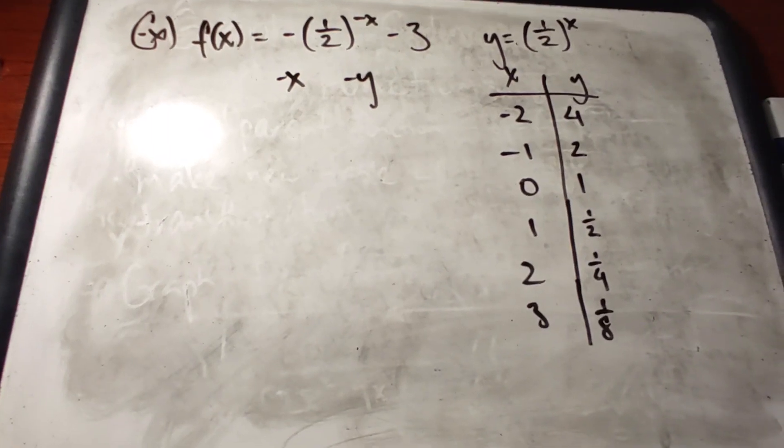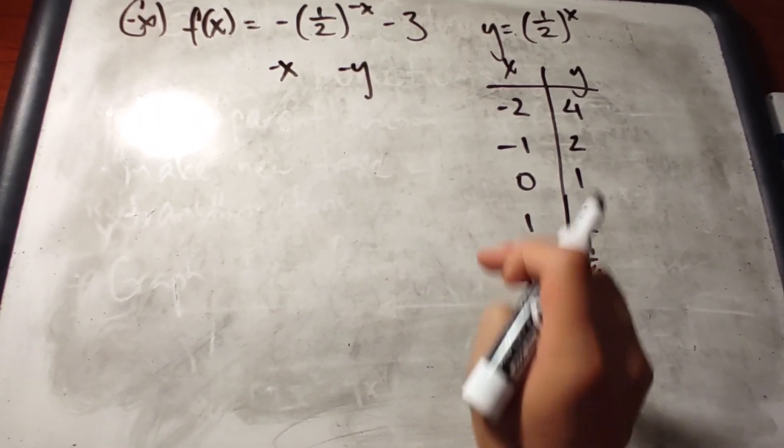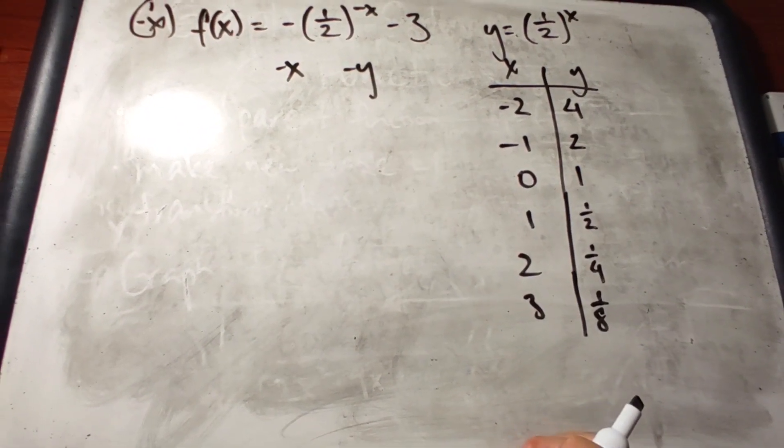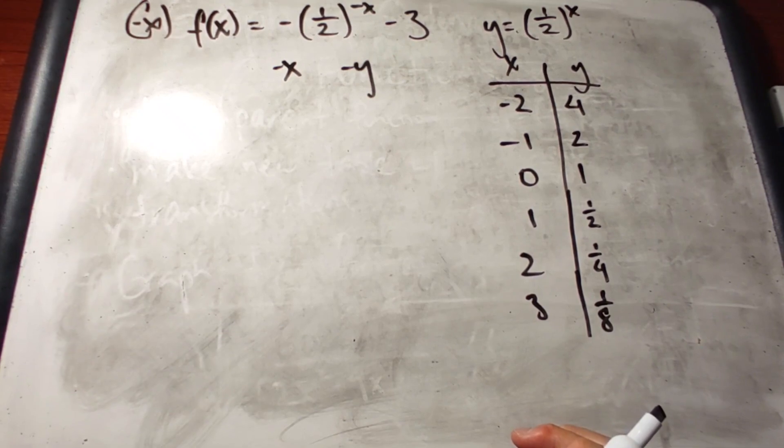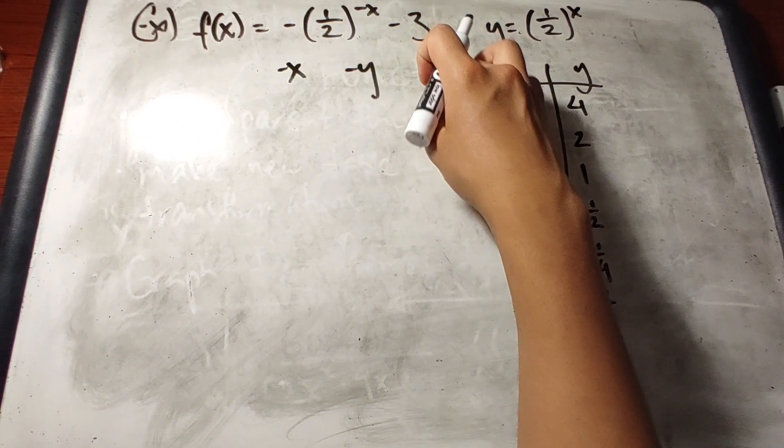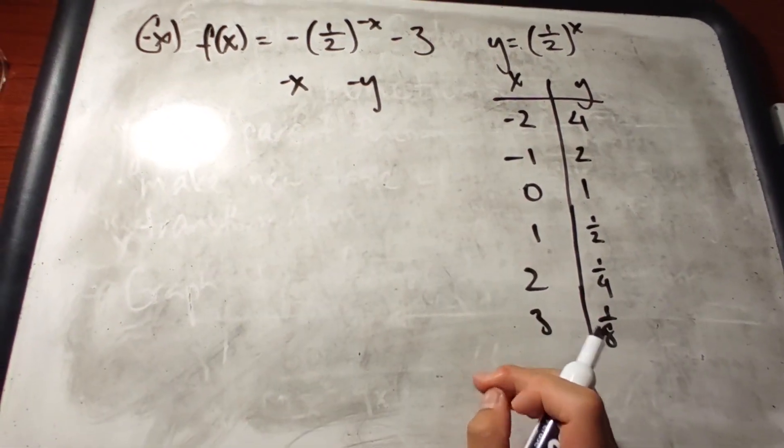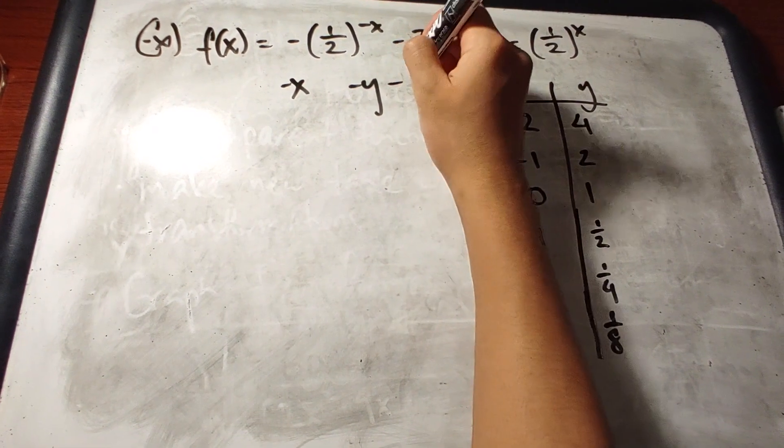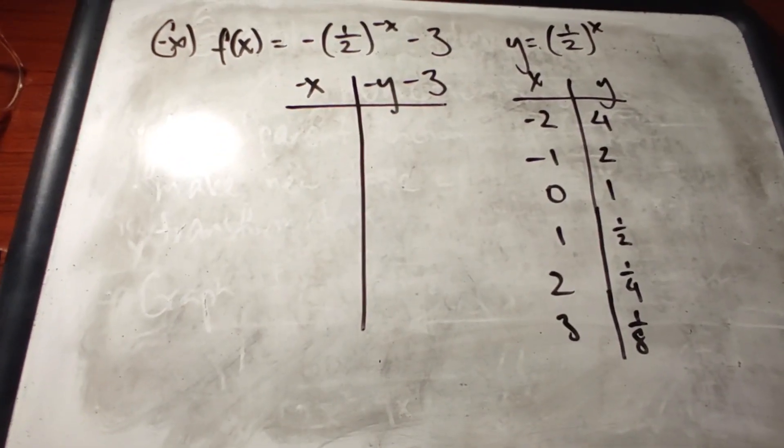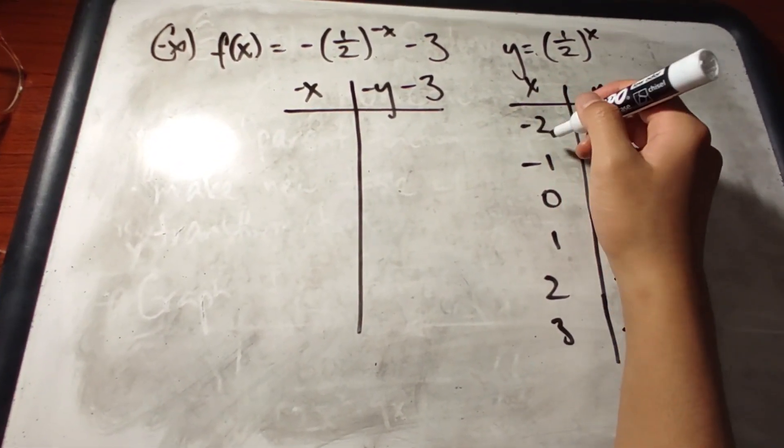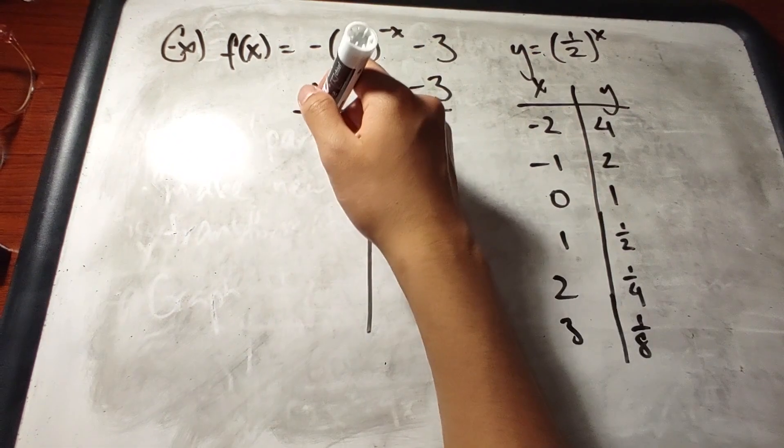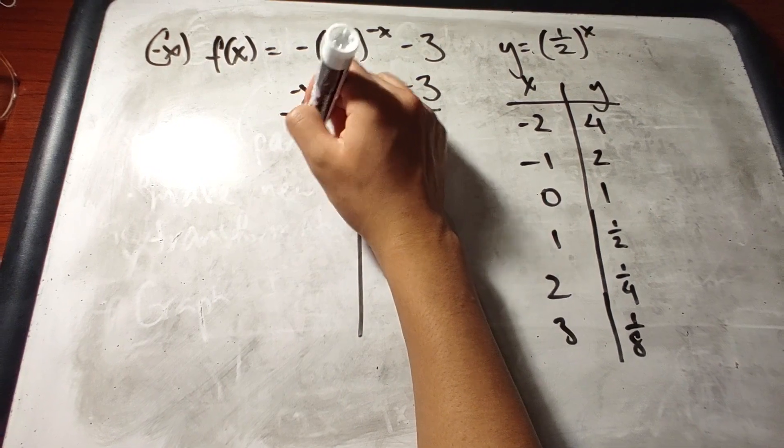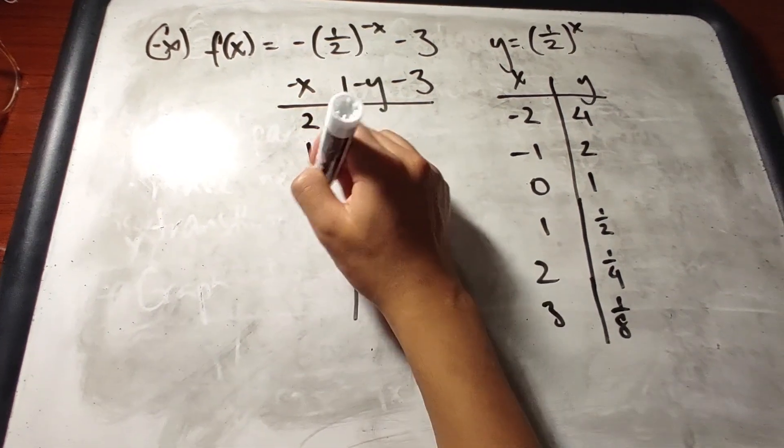When we change the translation into the graph, what we want to do is to visualize what this translation does to the graph. So it's minus 3, so it brings the graph down. So every y value would go down 3. And for every x value here, we're going to multiply by a negative 1 because of the negative here. So a negative 2 would be a 2, negative 1 would be 1, and so on.